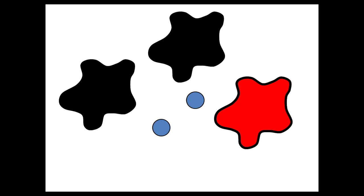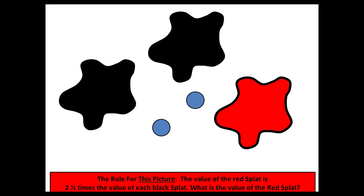In level four, there are two black splats and one red splat. You can also see two dots. This time, the rule is the value of the red splat is two and a half times the value of each black splat. The total is 29 in this case.